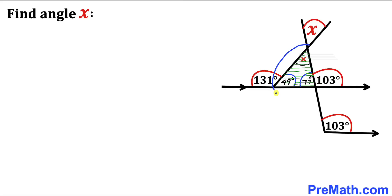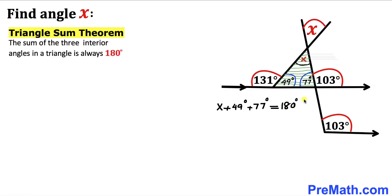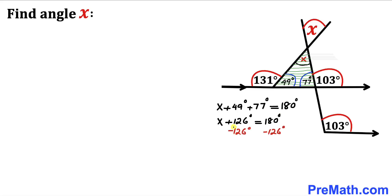Now let's focus on this triangle and recall the triangle sum theorem: the sum of three interior angles in a triangle is always equal to 180 degrees. So therefore angle x plus 49 degrees plus 77 degrees must be equal to 180 degrees. Combining like terms, we get x plus 126 degrees equals 180 degrees. Subtracting 126 degrees from both sides, our angle x turns out to be 54 degrees.